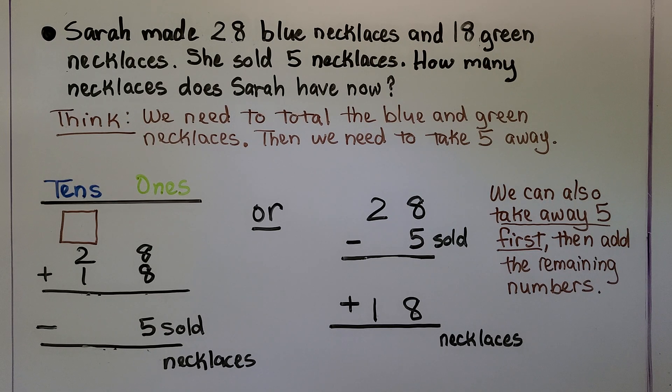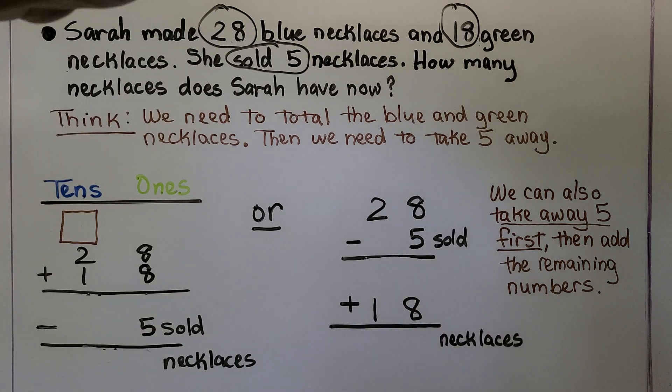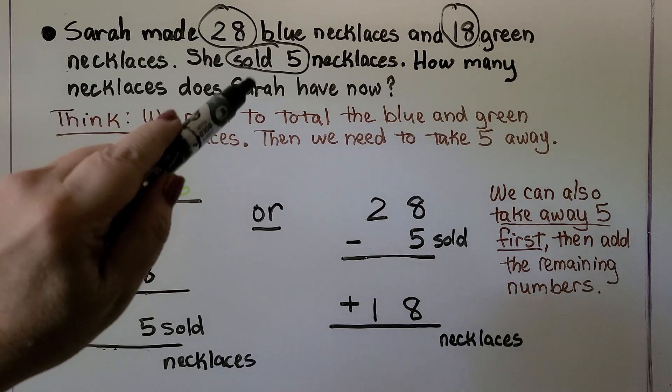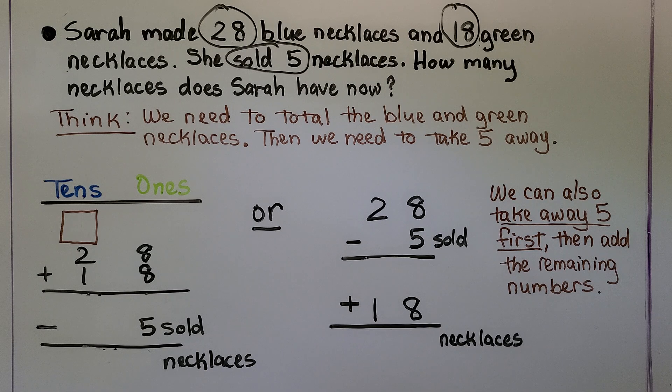Sarah made 28 blue necklaces and 18 green necklaces. She sold 5 necklaces. How many necklaces does Sarah have now? So we can first circle our important information. 28 blue, 18 green, but sold 5. We need to total the blue and green necklaces. Then we need to take 5 away that she sold.